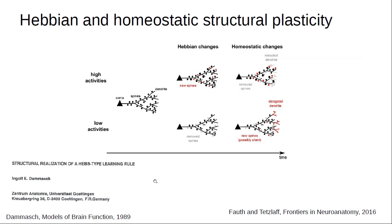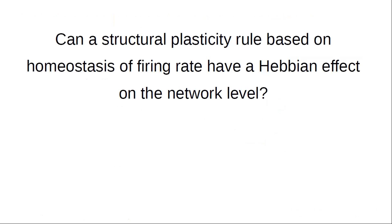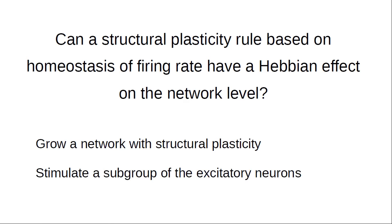In 1989, Dammasch put forward the idea that the compensating algorithm he was working with — which by this definition would be a homeostatic rule — could actually implement a Hebbian type of learning on the network level. This is what we then wanted to test: can a structural plasticity rule based on homeostasis of firing rate have a net Hebbian effect on the network level? To test this, we grow a network with the structural plasticity model, stimulate a subgroup of excitatory neurons, and see if we can form an assembly.